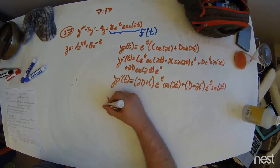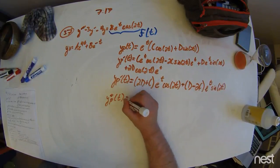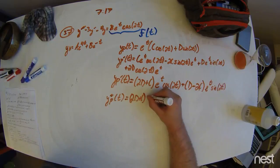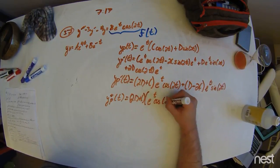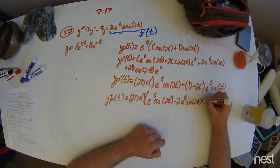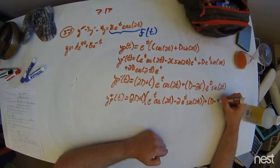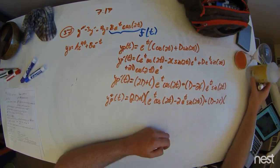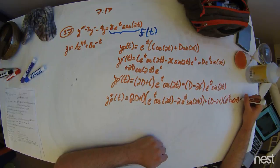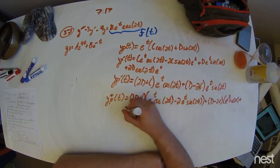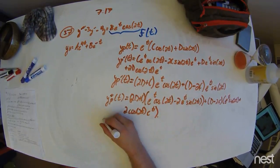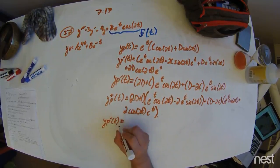So y double prime equals e to the t times sine of 2t, plus d minus 2c times e to the t times sine of 2t, plus 2 times the cosine of 2t e to the t. Simplifying this even further, what we did for y prime particular becomes such.